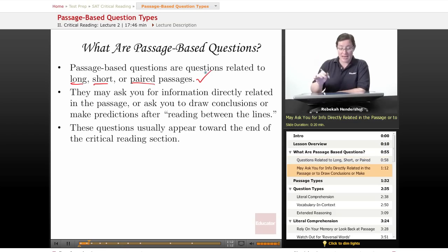These questions may ask you for information directly related in the passage, something that someone comes out and says, or they may ask you to draw conclusions or make predictions after reading between the lines—which means figuring out what someone's saying even when they're not saying it. These questions usually appear toward the end of the critical reading section.